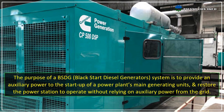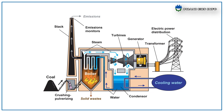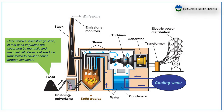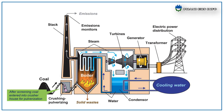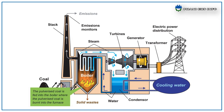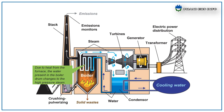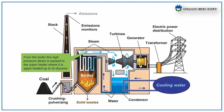These are the main components in the power plant system. Next, we can see the process of power generation, step by step. First, coal is stored in a coal storage shed. In that shed, impurities are separated manually and mechanically. After screening, coal enters into the crusher house for pulverization. The pulverized coal is fed into the boiler. Due to the heat from the furnace, the water present in the boiler drum changes to high-pressure steam. From the boiler, this high-pressure steam is passed to the superheater where it is again heated up to its dryness.